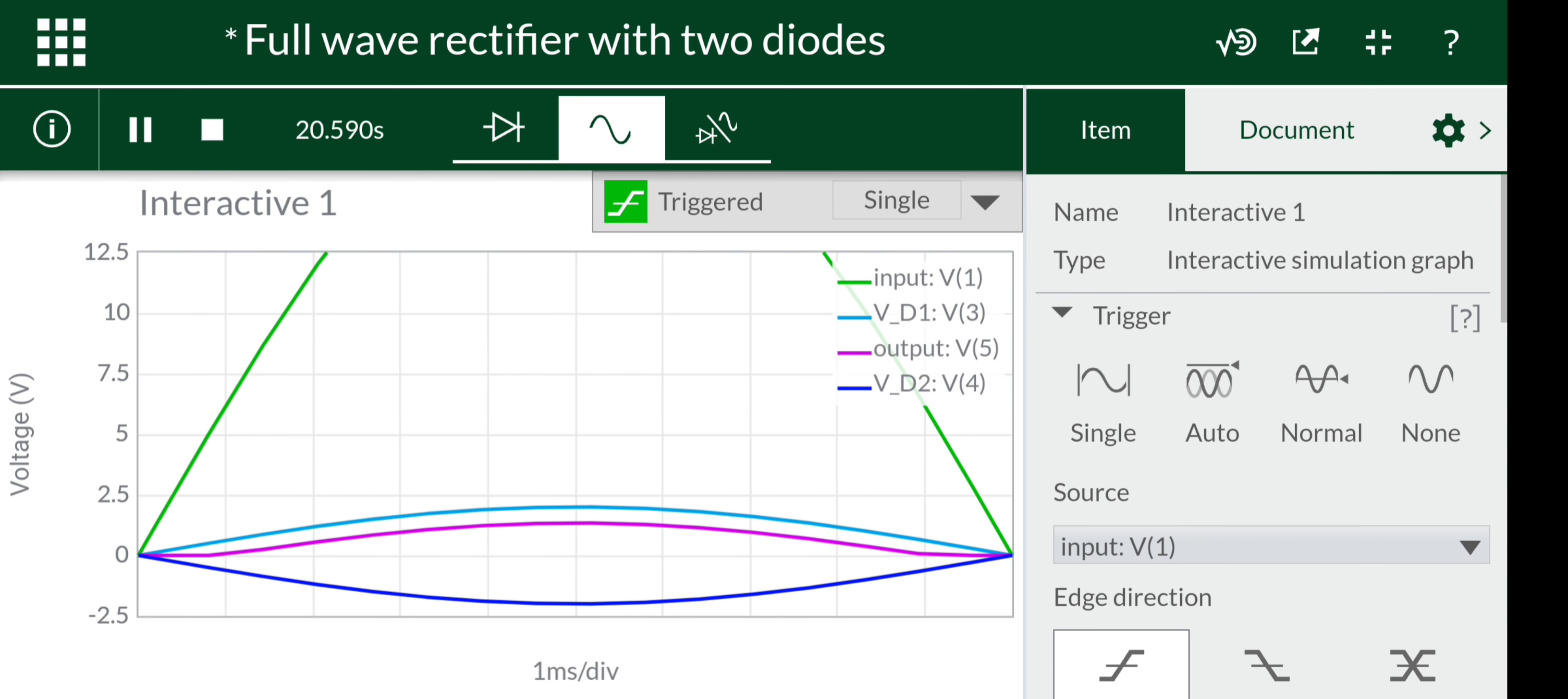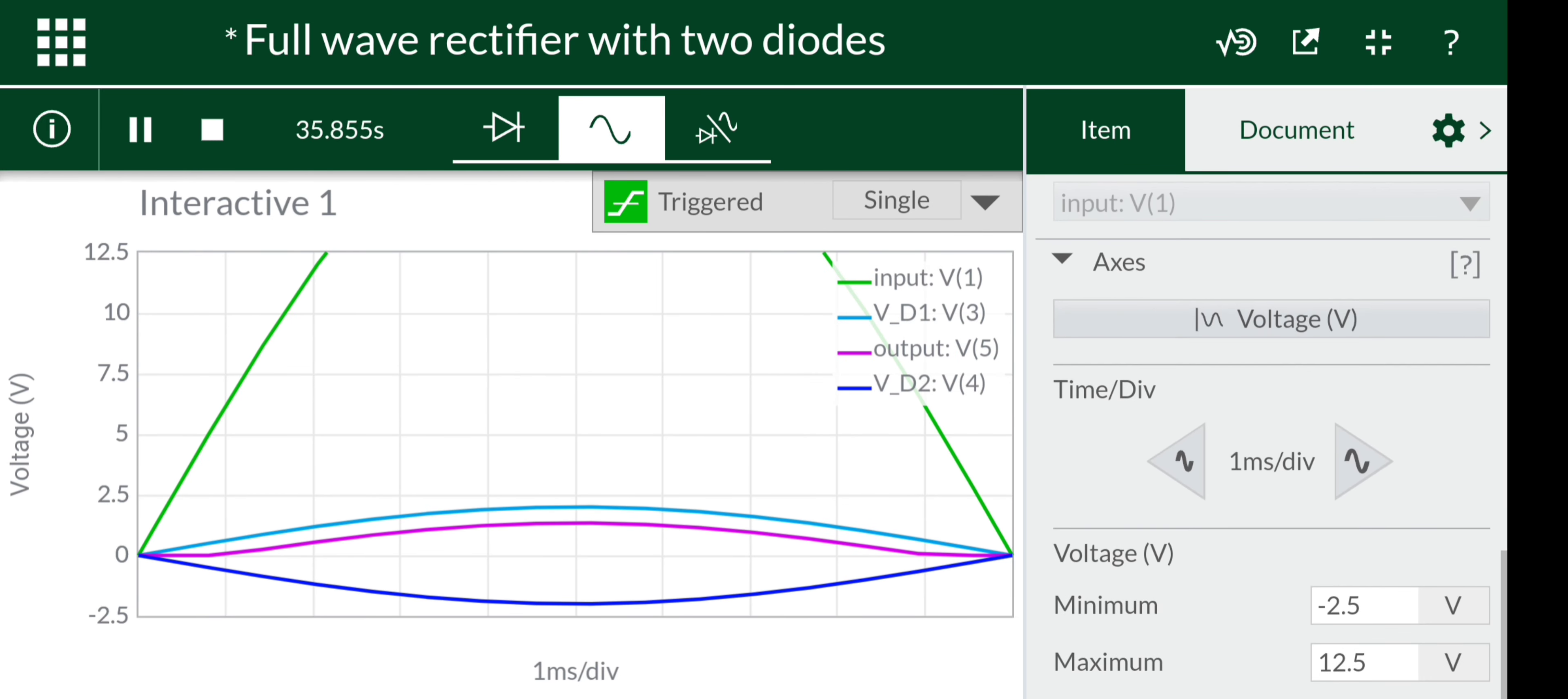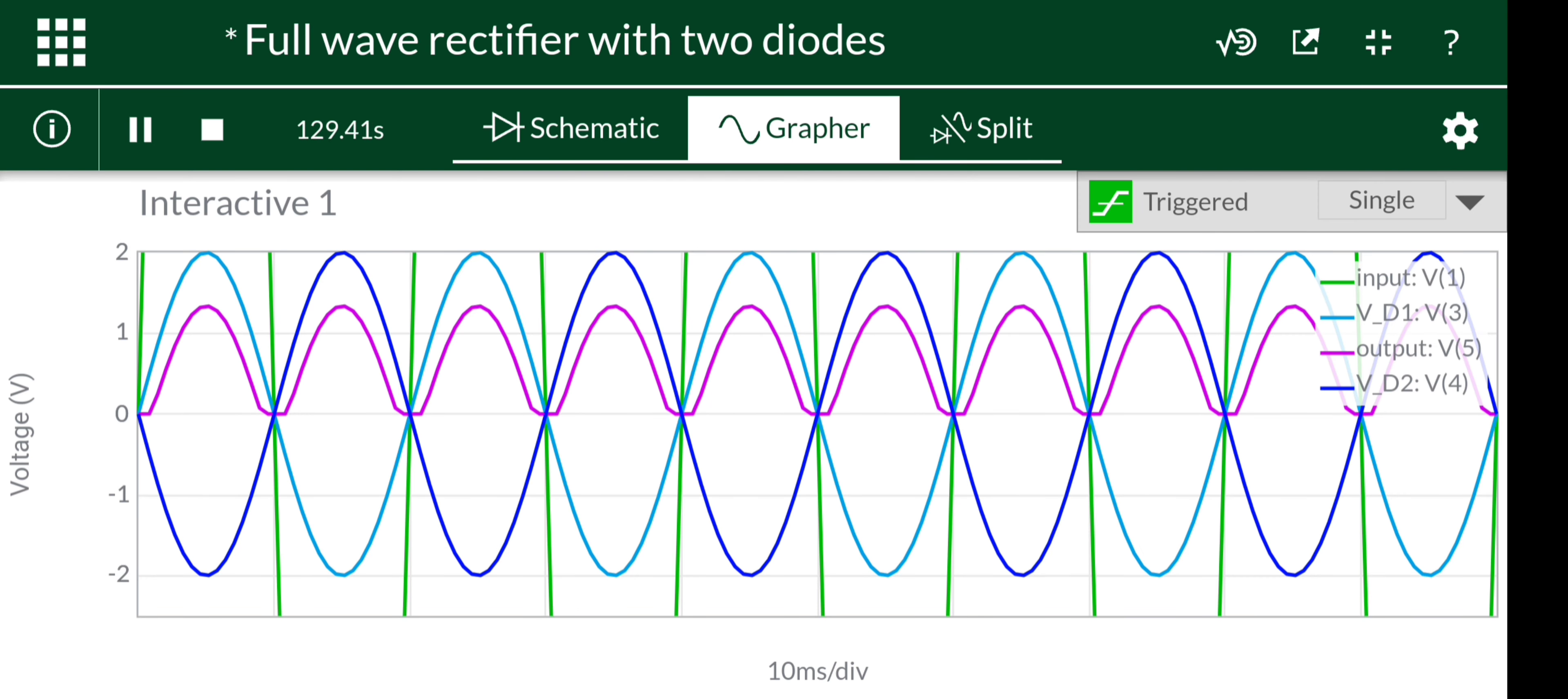The pink waveform is the output waveform at this scale. The pink waveform is equal to 3.6 volts at the output and it's pulsating.